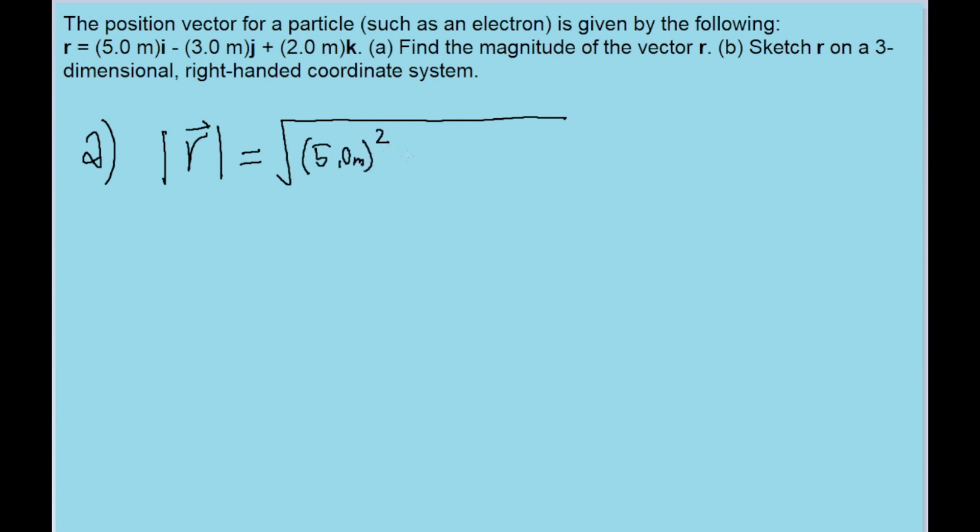So that's the square root of 5 meters squared plus 3 meters squared. And we don't need to worry about the fact that there's a negative sign in front of the 3 because it's going to cancel out. All negative signs cancel out when you have a square.